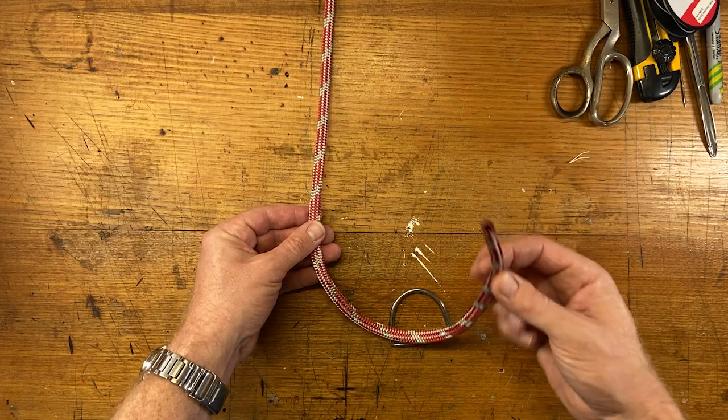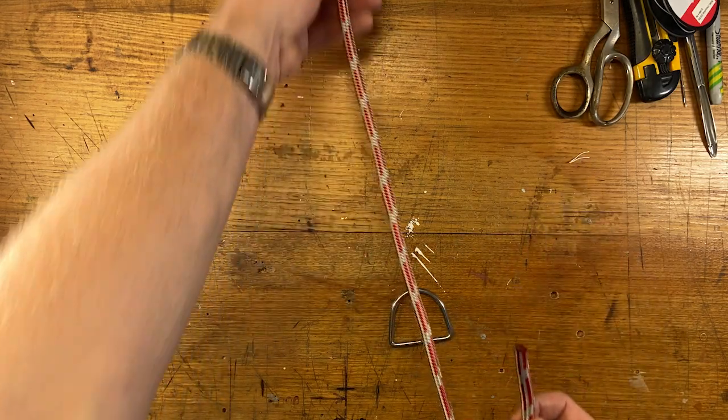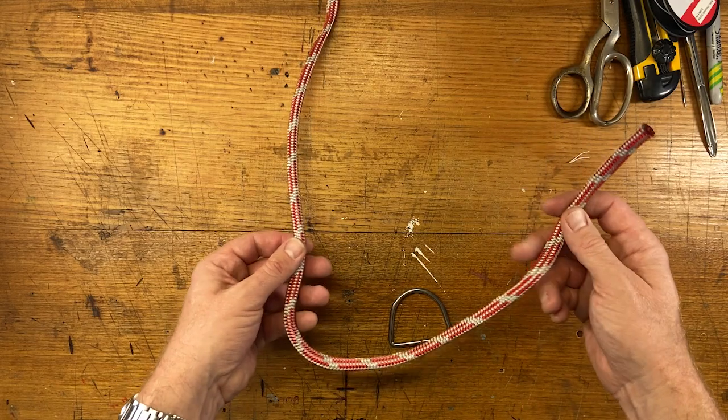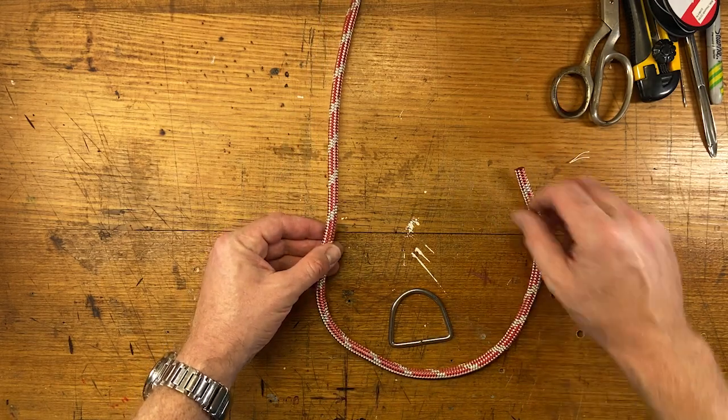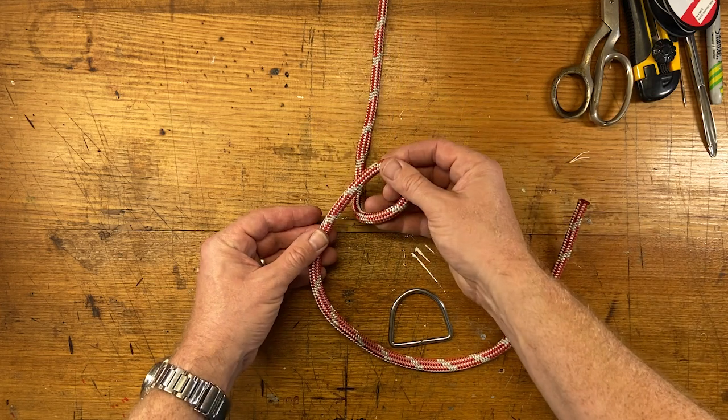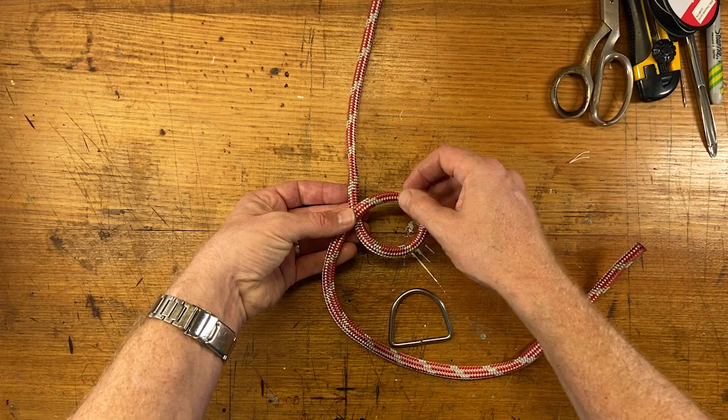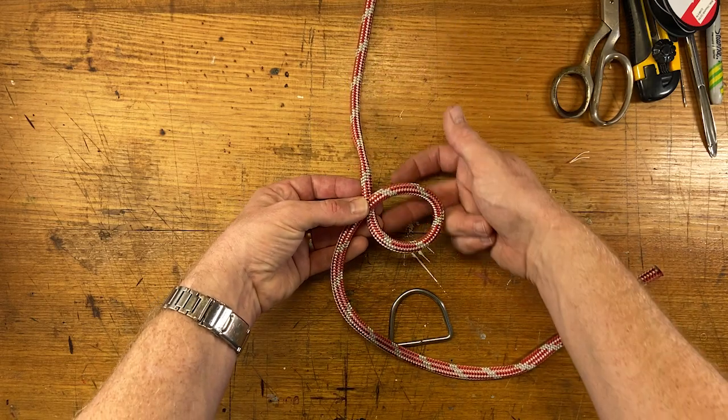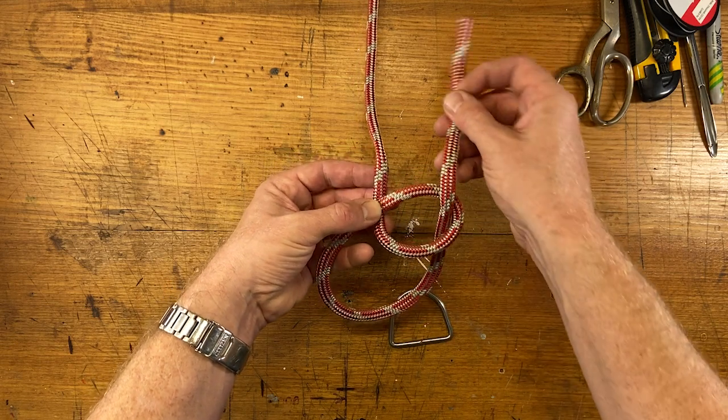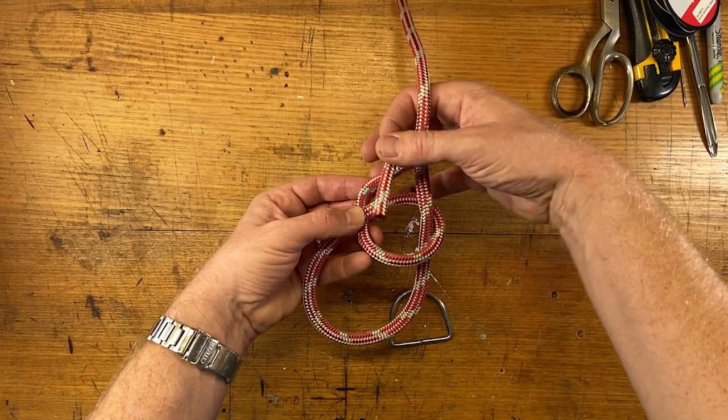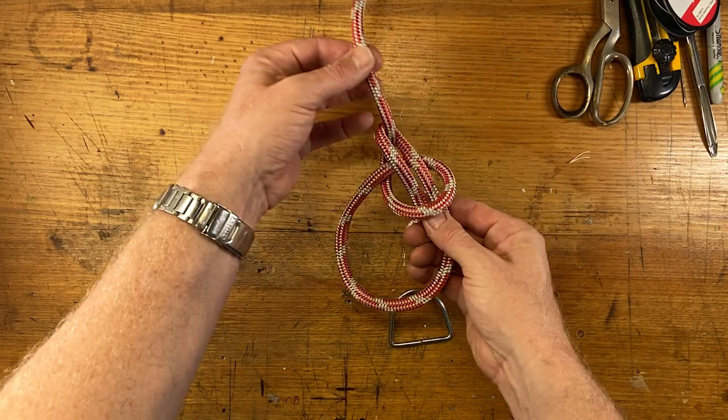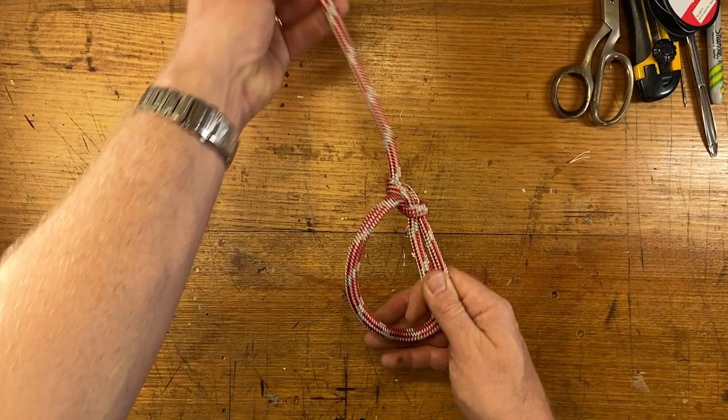So we've got our bitter end here, this is the loose end, and this is the standing end, that's the bit that goes to the hook that goes onto your bass clarinet. So we start by making a loop in the standing end, putting my fingers over the top and twisting that way so that the standing end passes beneath the bitter end. Then we take our bitter end, put it up through that hole, around behind the standing end, and then back through that hole again.